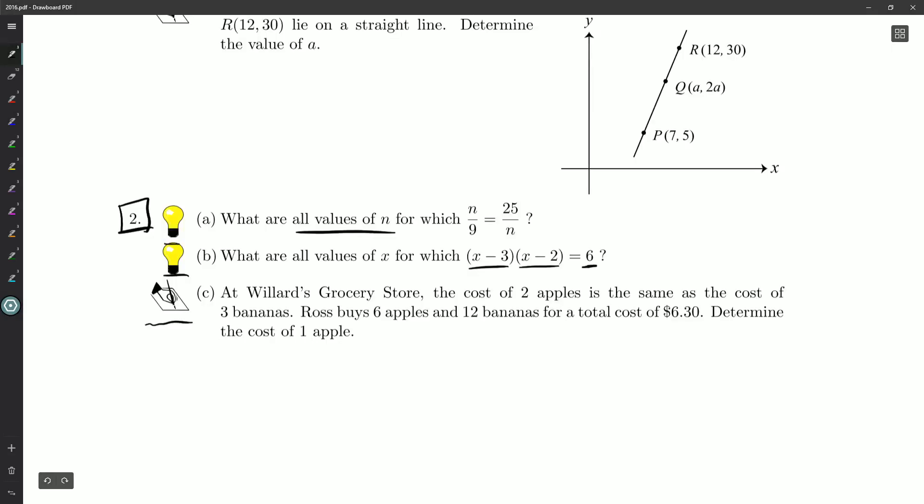Let's get a fresh sheet of paper again. And now we've got C part here. At Willard's grocery store, the cost of two apples is the same as the cost of three bananas. Ross buys six apples and 12 bananas for a total cost of 630. Determine the cost of one apple. Okay. So we could say something like, and it's a written question, so we probably do want to say, you know, let A be cost of apples, B be the cost of bananas.